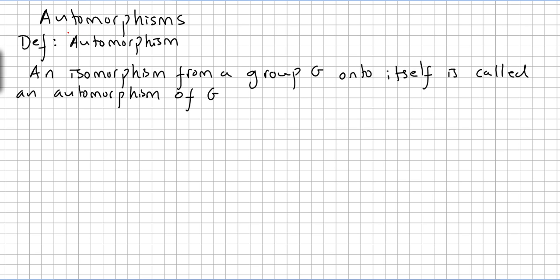In this video we start with the concept of automorphisms. An automorphism is an isomorphism from a group G onto itself.